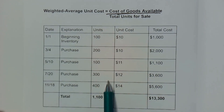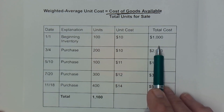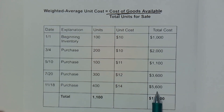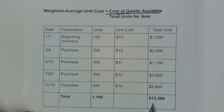I've added up the total number of units available for sale and I get 1,100 units — that's total units available for sale. The total cost: I went ahead and added up all of these in this column, including the beginning balance, and I got $13,300. So we have here the total units available for sale and the cost of goods available for sale.